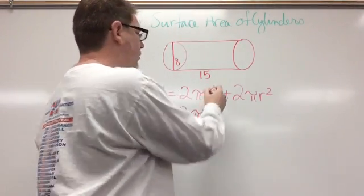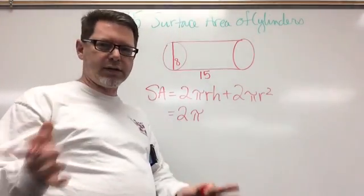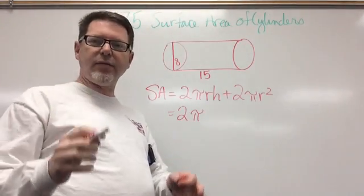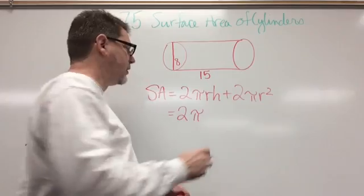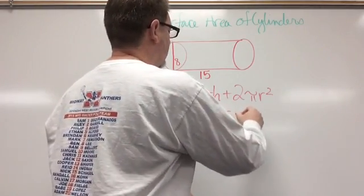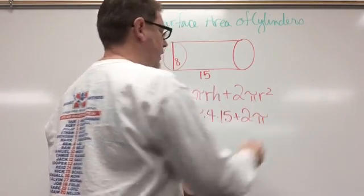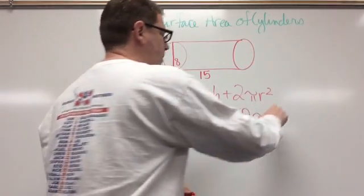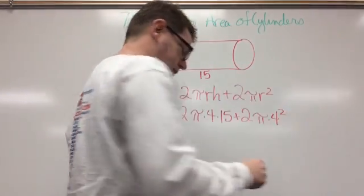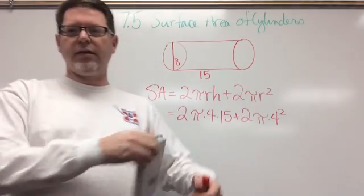2π, and what is R? No, R is not 8. We have to divide 8 by 2 in order to find the radius, and that's 4. Times 4 times 15 plus 2 times π. And again, R is 4 times 4 squared. So we're going to plug that into our calculator.